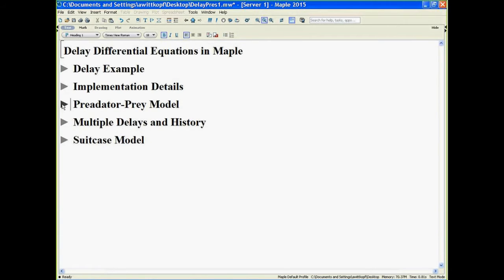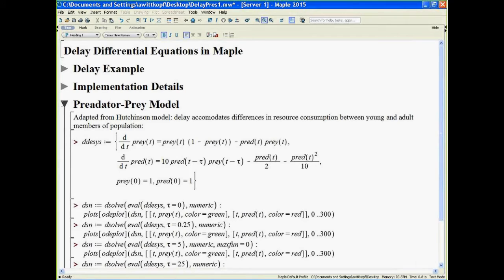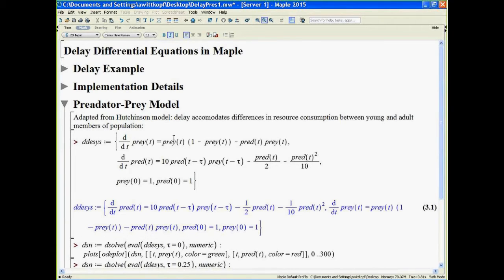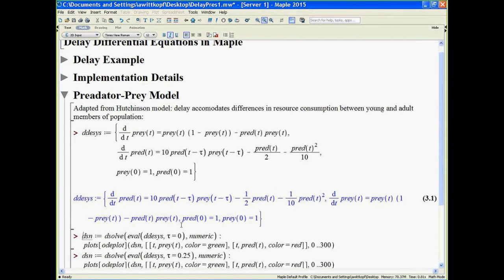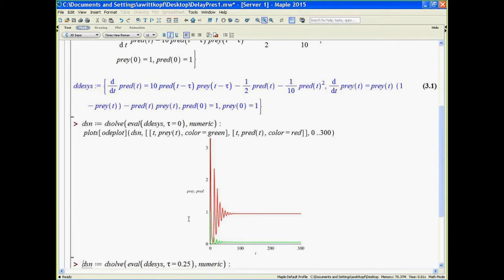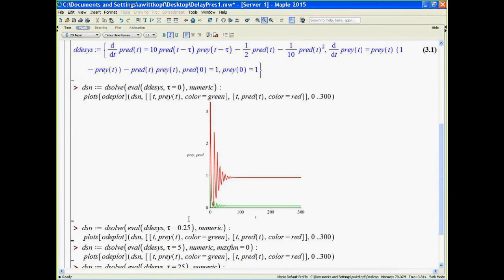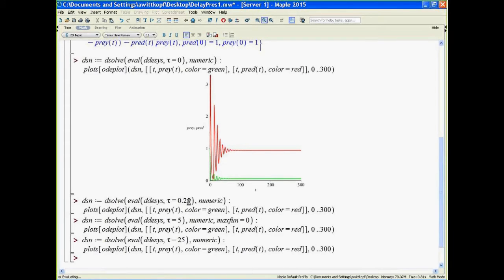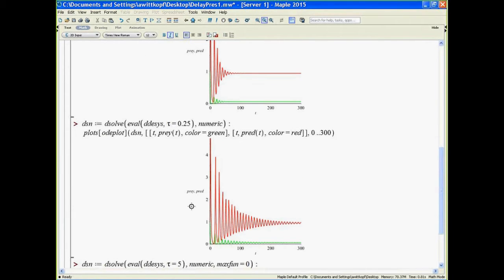Now on to another example. We look at a modification of a well-known predator-prey model, where the delay is used to accommodate resource consumption differences between young and adult members of the population. These are the equations for the model. And we can solve. In the first instance, we solve with no delay. And we see that in this case, the populations stabilize in a relatively short time, staying constant after that. In addition of a small delay, the populations still stabilize, but it just takes a little longer.